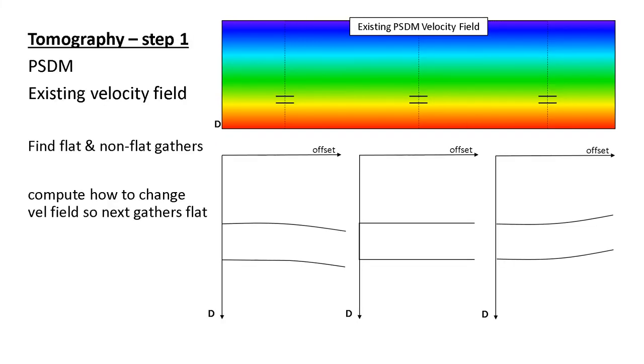Tomography. One way that we can flatten gathers in generating depth migration velocity fields.